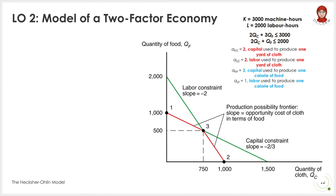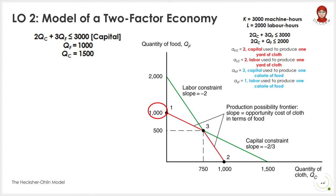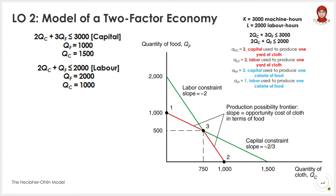This figure shows the production possibility in our numerical example. Using the capital equation where capital equals 3,000 machine hours, if we assume zero units of clothes produced, the maximum is 1,000 calories of food produced. In contrast, if we assume zero units of food produced, the maximum is 1,500 yards of clothes produced. Using the labour equation, if we assume zero units of clothes produced, the maximum is 2,500 calories of food produced. In contrast, if we assume zero units of food produced, the maximum is 1,000 yards of clothes produced.